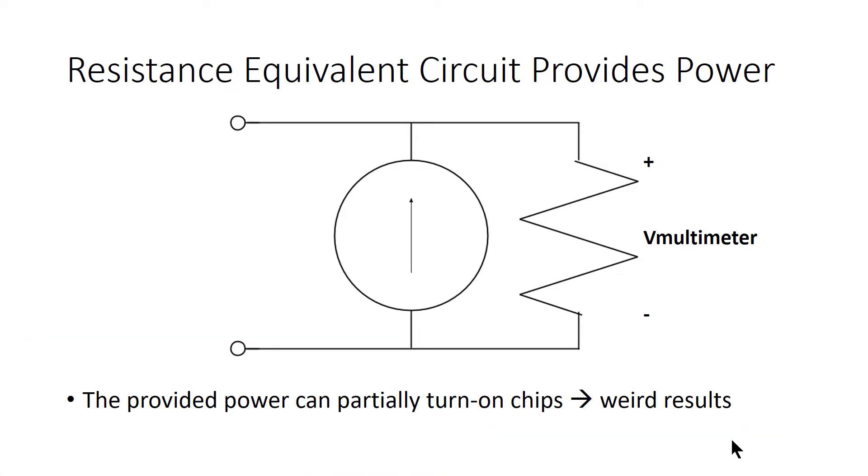Next, we want to think about how the current mode multimeter fits into our big ideas of circuit measurement. The equivalent circuit model for a current mode multimeter is a very small resistance, this 10 ohm thing that you see here.